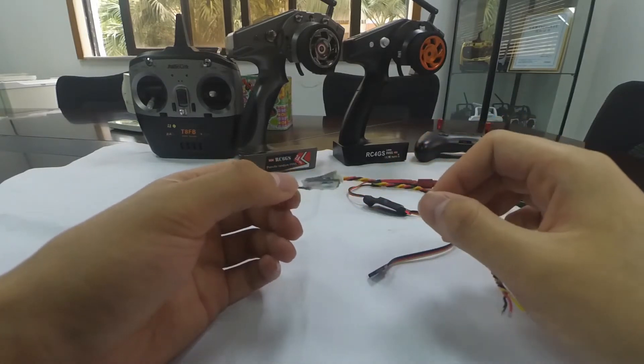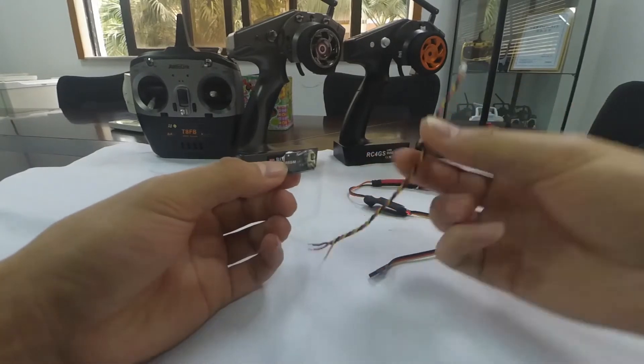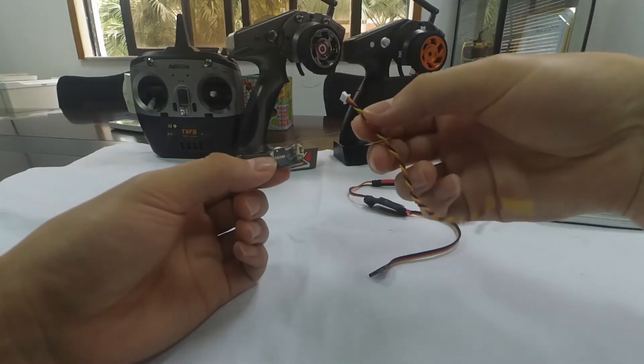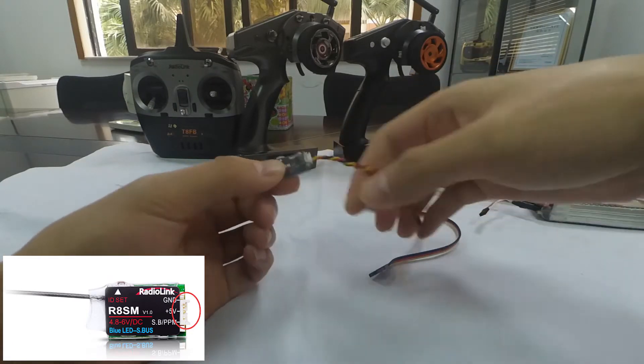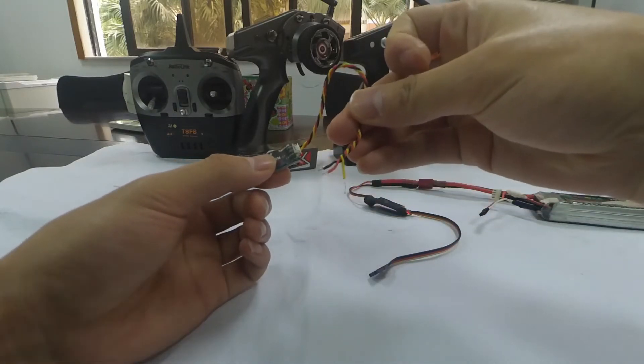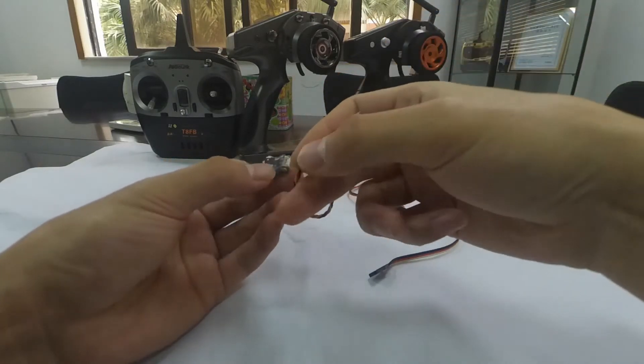RASM is a super mini receiver with 8 channels. We can see that there are no pins but only a wire packed together which can be directly welded with the flight controller board of mini drones or receiver board of mini RC cars.